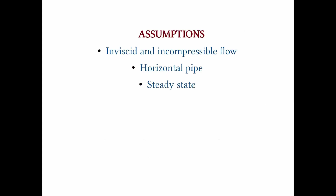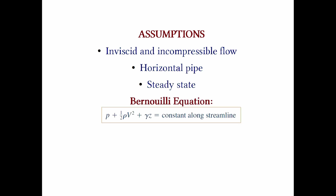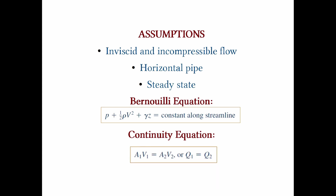With the assumptions of an inviscid, incompressible and steady flow, the Bernoulli equation can be written as shown. The continuity equation provides a second relationship between V1 and V2 if we assume the velocity profiles are uniform. Since the fluid is incompressible, rho1 equals rho2. By using the continuity equation and knowing that the entrance area is 4 times larger than the exit area, we can determine V2 as 0.04 m per second.